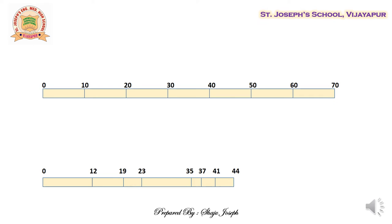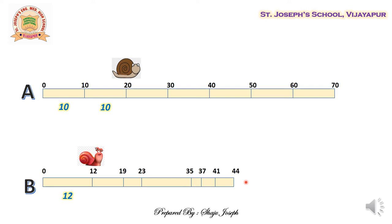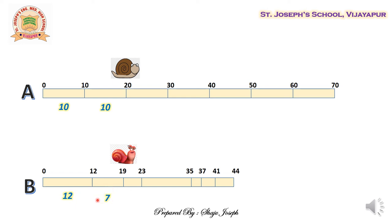In this example, the same table is put in picture form. Let us consider the first object as a snail called A and the second object as a snail called B. During the first 15 minutes, snail A covers 10 meters and snail B covers 12 meters — same time, different distances. During the next 15 minutes, snail A moves from 10 to 20 meters, a difference of 10 meters, whereas snail B moves only 7 meters, from 12 to 19 meters.